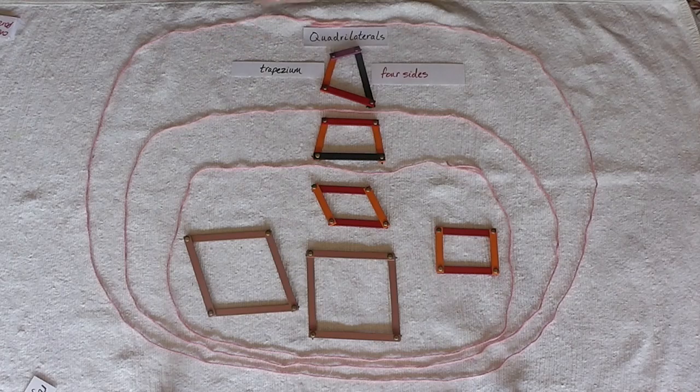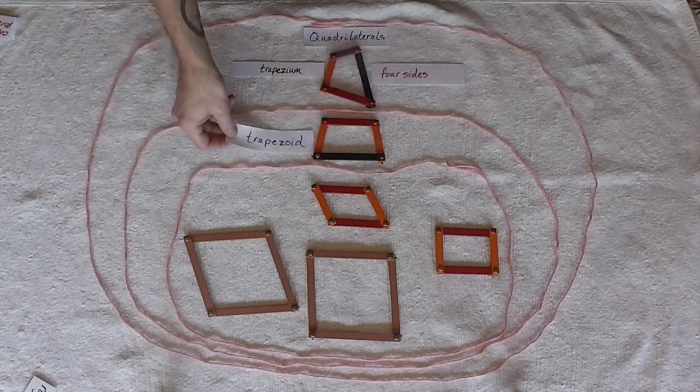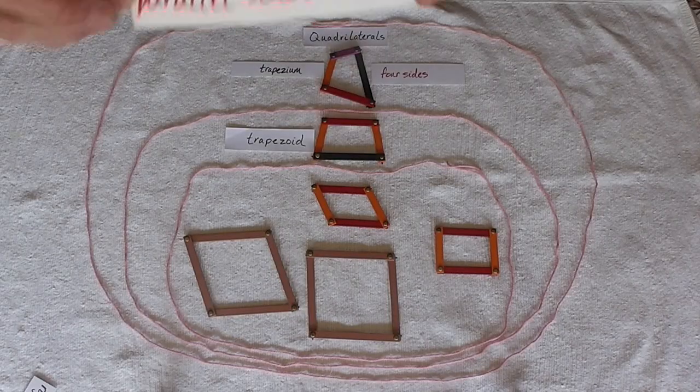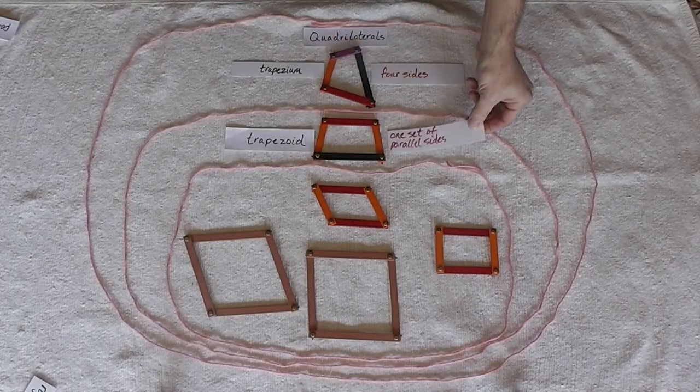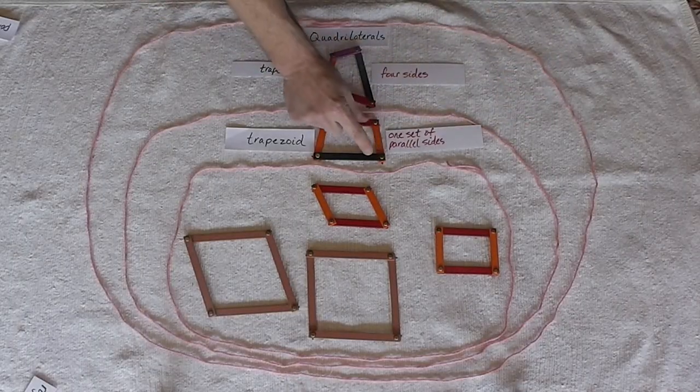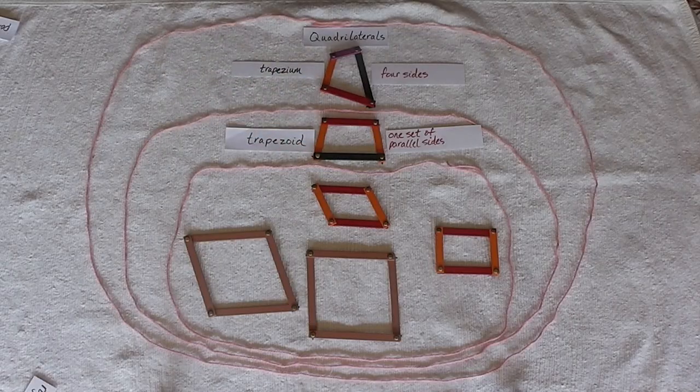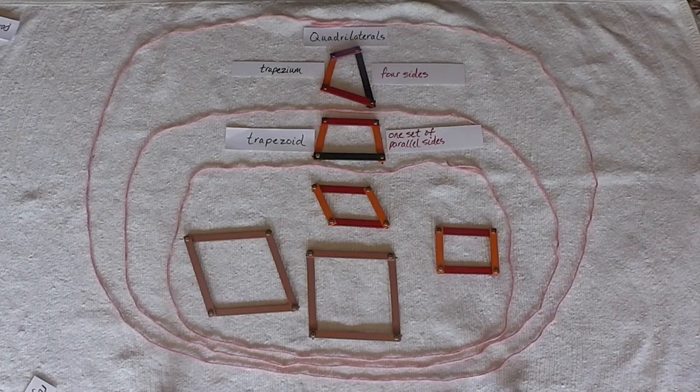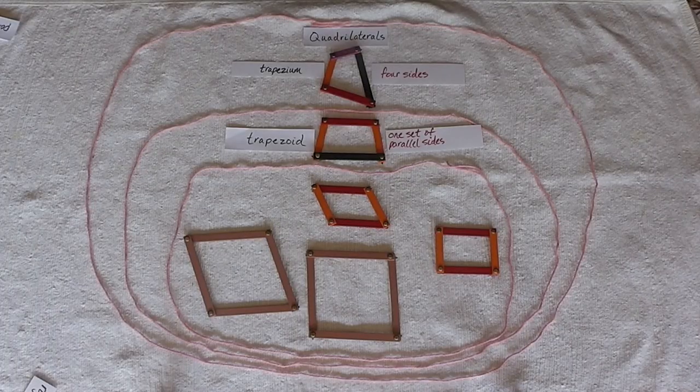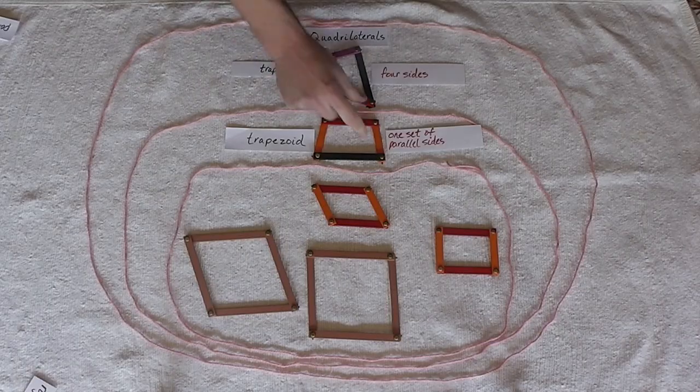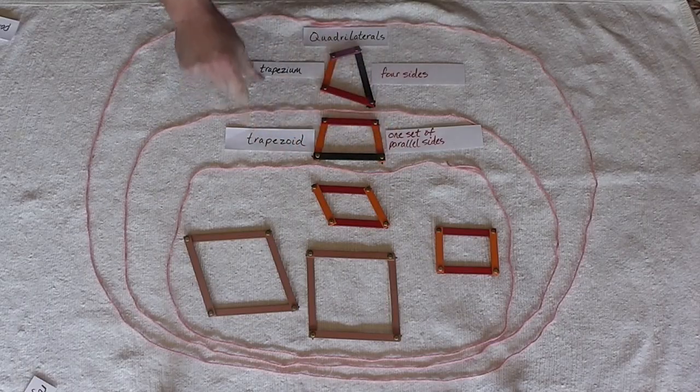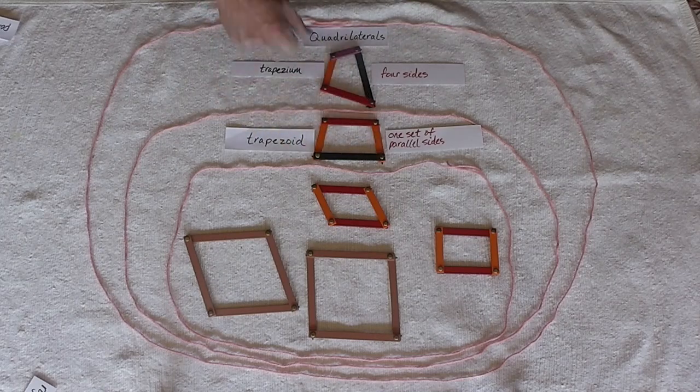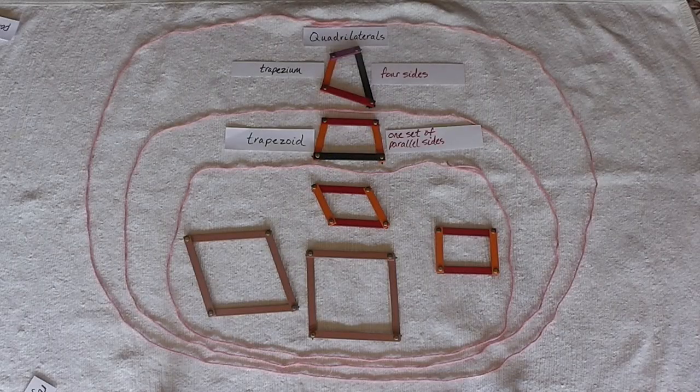What do we know about the trapezoid? It has at least one set of parallel sides. The red and black sticks from the stick box are the sides that are parallel to each other. In other words, parallel meaning they will never meet. We could extend these two lines forever and they would never meet. And I should go back and say these two line segments and they would never meet because they're parallel.